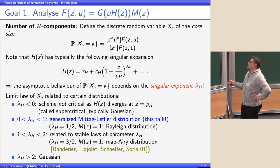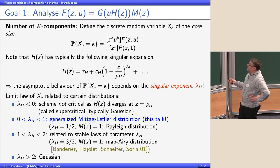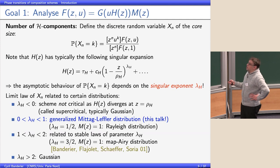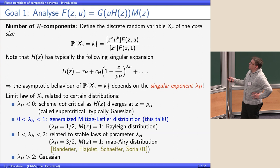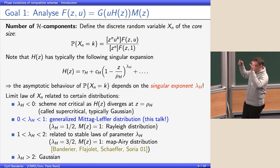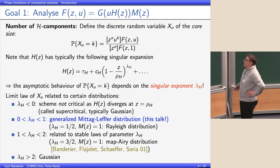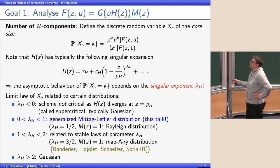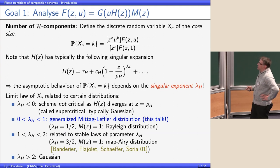The range lambda_H between 0 and 1 leads to a family of special functions called the generalized Mittag-Leffler distribution. In the special case when lambda_H equals one half and the factor m is exactly 1, you get the Rayleigh distribution, and there is a full set of models in combinatorics which lead to this Rayleigh distribution.